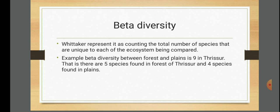For example: beta diversity between the forest and the plains in Thrissur is 9. That is, there are 5 species found in the forest of Thrissur and 4 species found in the plains. So a particular area called Thrissur has 9 species - 5 of them are unique to the forest, and 4 of them are unique to the plains. Between these 2 different areas, the alpha diversity of the forest is 5, and uniquely there are 4 in the plains. So the beta diversity in total is 9.